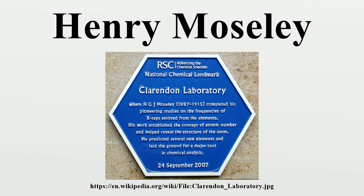This was a pioneering use of the method of X-ray spectroscopy in physics, using Bragg's diffraction law to determine the X-ray wavelengths. Moseley discovered a systematic mathematical relationship between the wavelengths of the X-rays produced and the atomic numbers of the metals that were used as the targets in X-ray tubes. This has become known as Moseley's law. Before Moseley's discovery, the atomic numbers of an element had been thought of as a semi-arbitrary sequential number, based on the sequence of atomic masses.